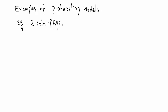When we try to define this model, we need Omega and P. Omega is the collection of all the possible outcomes of two coin flips. What are they? There are four possible outcomes.